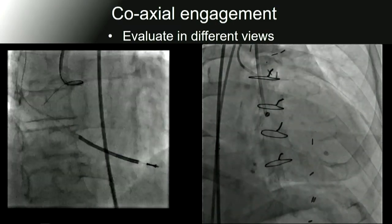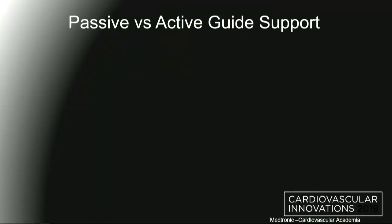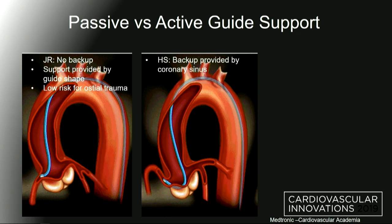We don't always need active guide support. Sometimes we can use what is called passive guide support. The passive guide support is what a JR would give you. This catheter does not rest against the aortic wall at all, and the only support you get is because of the shape of the guide. You would choose this in a simpler procedure where you're concerned about the ostium and don't want any ostial trauma. If the procedure is more complex and you need more backup and support, you move to something that rests against some other structure.